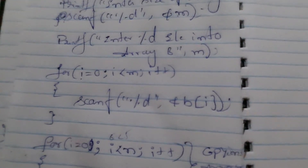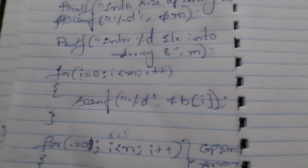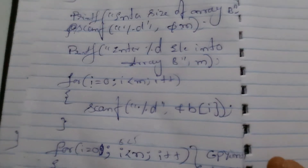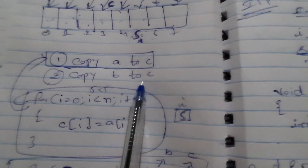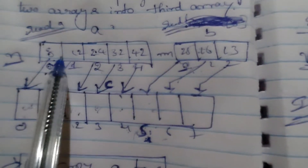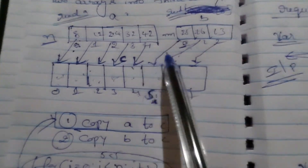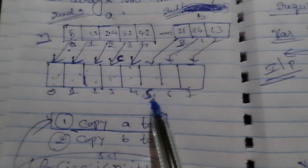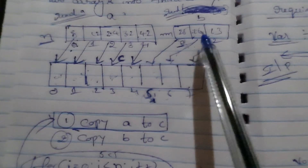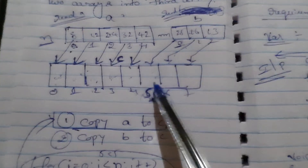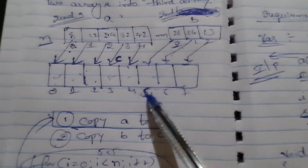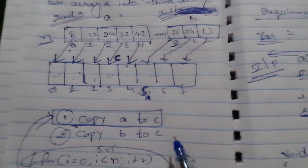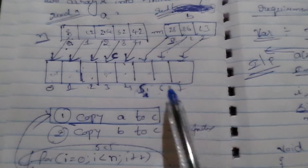Now we have read the size of array A, elements into array A, and elements into array B. Now we have to apply the logic. The logic is: first, copy A values into C, and second, copy B values into C. When copying A values into C, the index variables are the same — the copying stops when I reaches N. From there, you copy B elements. When copying B elements, different indexes are needed — for example, the 0th index in B should be copied into the 5th index in C. That is why we require two different index variables.